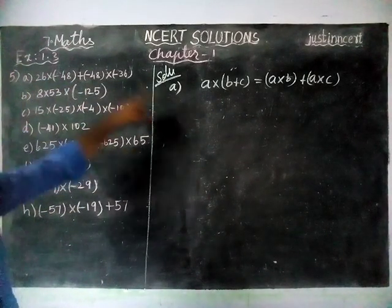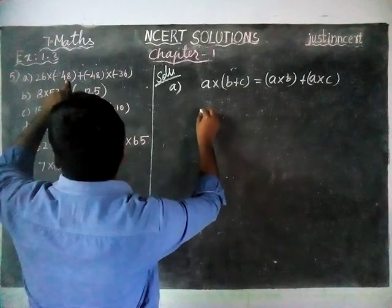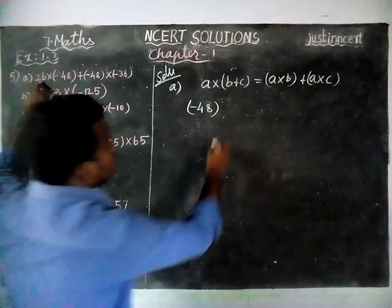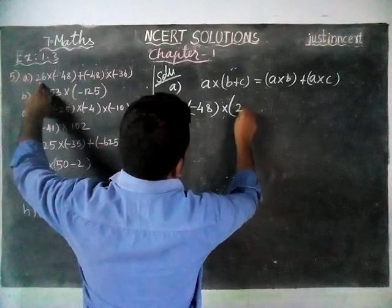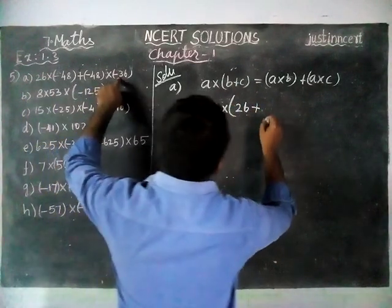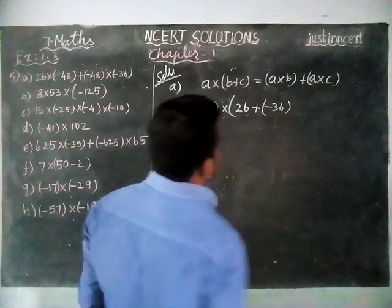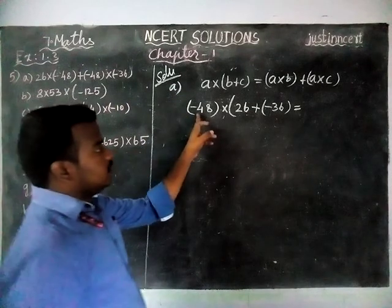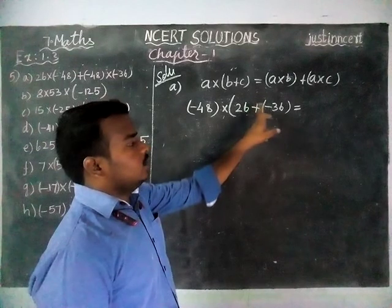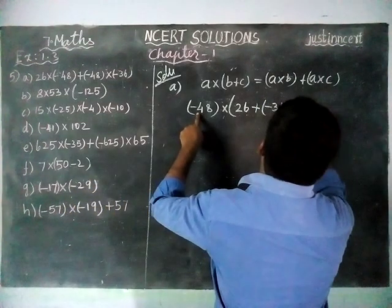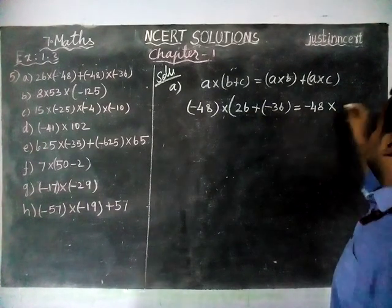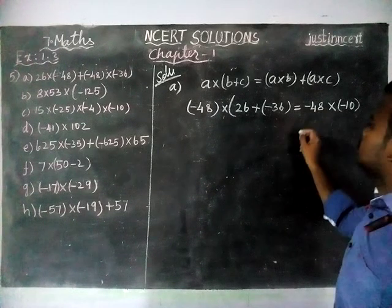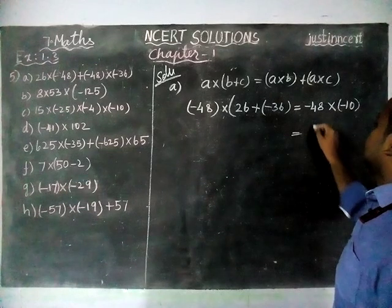From here, -48 is common, so we take it outside. Then the remaining values are B = 26 and C = -36. This gives us -48 × (26 + (-36)). Now 26 is positive and -36 is negative — both have different signs, so we find the difference. The difference between 36 and 26 is 10. Since 36 is the greatest number and has a minus sign, the result is -10. Multiplying: minus × minus becomes plus, and 48 × 10 = 480.